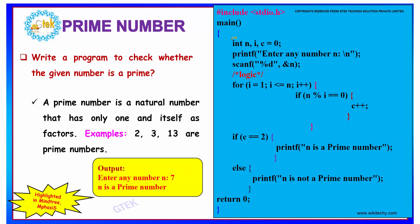You have to declare the required variables. Here, n, i, and c are declared, and c is initialized to 0.